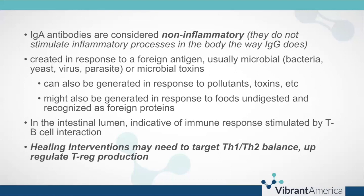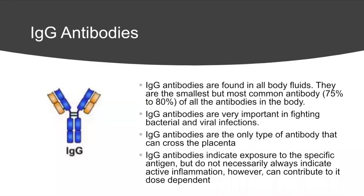The Th1, Th2 as well as Th17 immune responses — understanding how those work, where they come from, and how they affect our response to things in our environment including our food — are discussed in depth in the wheat zoomer modules, including a good discussion of Tregs, how to upregulate those, and how to keep balance in the immune system in the gut. IgA antibodies are found in all body fluids; they are the smallest but most common antibody, making up about 75 to 80% of antibodies throughout our entire body. They are also the only type of antibody that can cross the placenta.